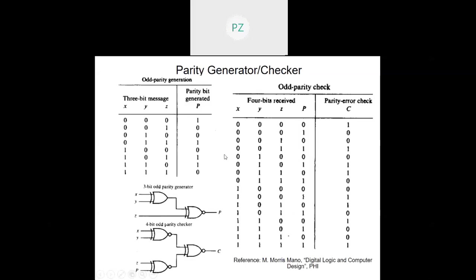Next we are going to talk about parity generator and checker. A parity bit is basically a single error detection code — it is not a correction code. We add a parity bit for odd parity generation. Suppose I have a three-bit message: the parity bit is added such that the total number of ones remains odd. If the message already had an odd number of ones, the parity bit is kept zero; if even, the parity bit is set to one to make the total odd.